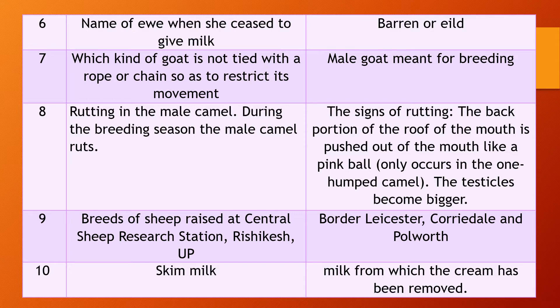Question 8. Rutting in male camel — that is, during the breeding season the male camel ruts. What is that? Answer: the back portion of the roof of the mouth, that is the soft palate, is pushed out of the mouth like a pink ball which can be seen from outside at a distance. This occurs only in the one-hump camel. At the same time, the testicles become bigger. This is called rutting in the male. Important question.